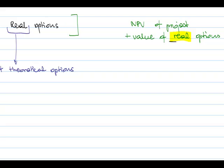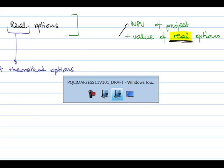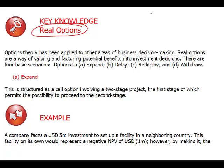You need to analyze real options — only things you can truly do. If there is an option that provides value, you increase the NPV of the project by the value of that option. Typical real options are: the option to expand, the option to delay, the option to redeploy, and the option to withdraw.